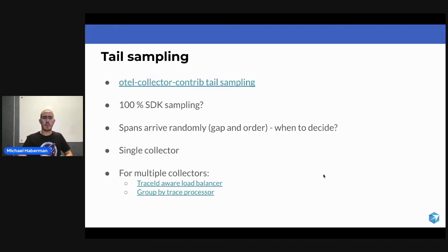Tail sampling is out of the OpenTelemetry collector core. It's in the contrib part, so you will need to use the contrib image.